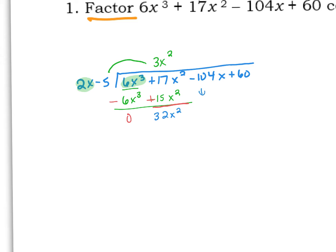Then we bring down this next term, so this minus 104x. We're going to divide again. We have to divide 2x into this 32x squared. Another way of thinking about that is: 2x times what is going to give us 32x squared? I have to multiply by 16x.